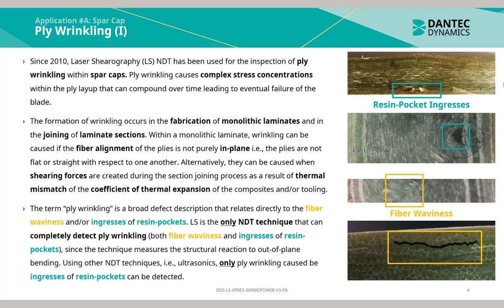Within a monolithic laminate, wrinkling can be caused if the fibre alignment of the plies is not purely in-plane, i.e. the plies are not flat or straight with respect to one another. Alternatively, they can be caused when shearing forces are created during the section joining process as a result of thermal mismatch of the coefficient of thermal expansion of the composites and/or tooling.